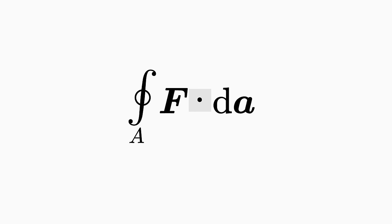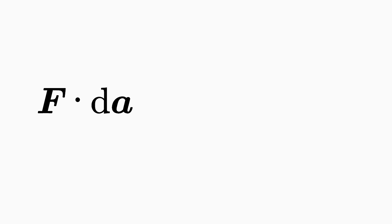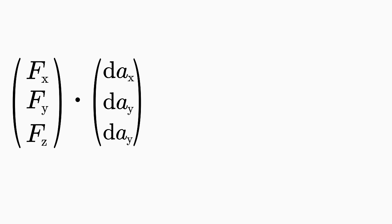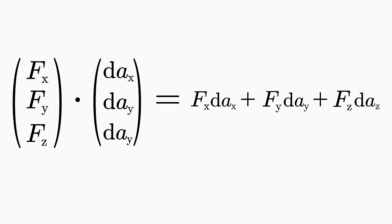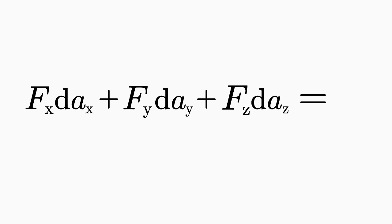The dA element is orthogonal to the surface and by definition points out of the surface. The dot between the vector field and the dA element represents the so-called scalar product. The scalar product is a way to multiply two vectors — here, the scalar product between the vector field and the dA element is formed. The scalar product is defined such that the first, second, and third components of the two vectors are multiplied and then added up. The result of the scalar product is no longer a vector, but an ordinary number, a so-called scalar.